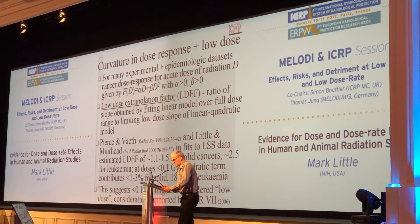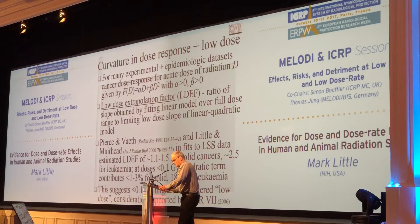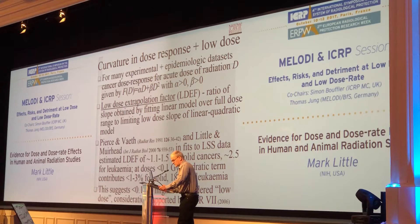This gives a measure of overestimation of risks from fitting a linear model to cancer dose response data. Estimates of LDEF have been made by various people, myself and various people at RERF. For solid cancers, estimates made about 10 years ago were about 1.1 to 1.5, and a bit higher, about 2.5 for leukaemia. This suggests that at doses of about 100 milligray, the quadratic term would contribute about 1 to 3% of the total excess, and for leukaemia about 18%, providing support for regarding 0.1 gray as low-dose.